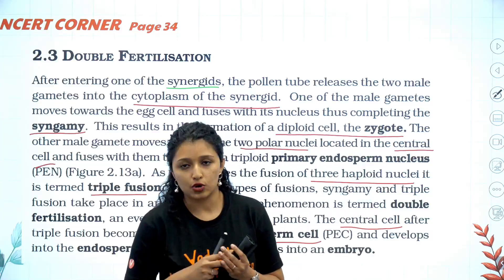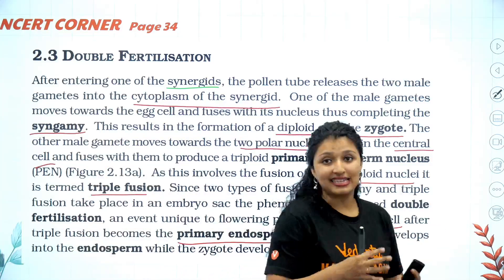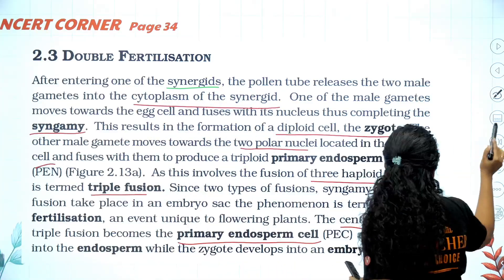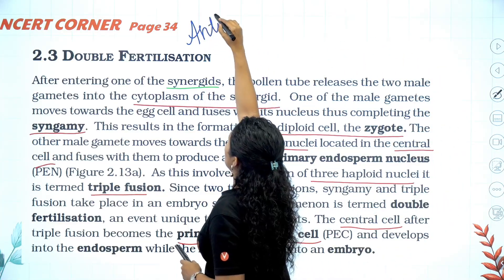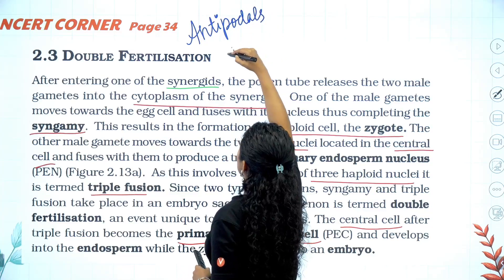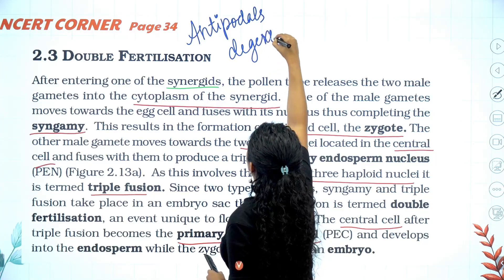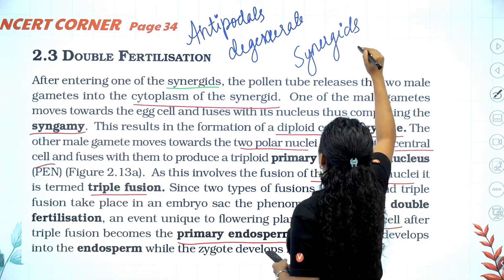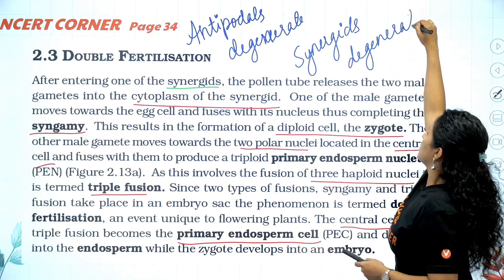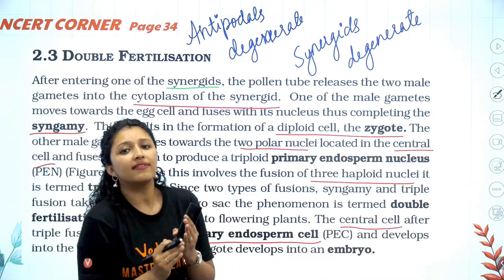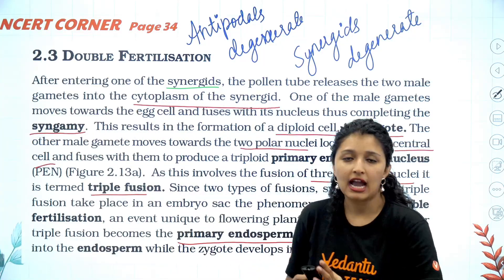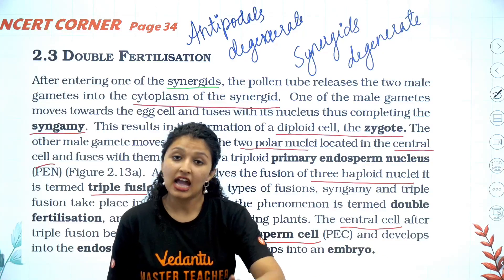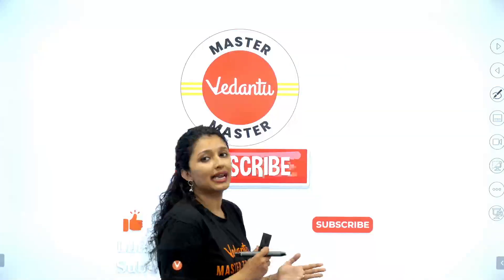After fertilization, some things happen: the antipodals degenerate, the synergids also degenerate. The remaining cells proceed to further development — the zygote develops into the embryo, and the primary endosperm nucleus develops into the endosperm. That's all about double fertilization.